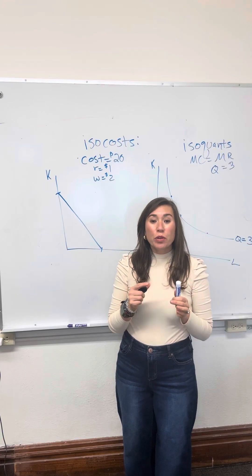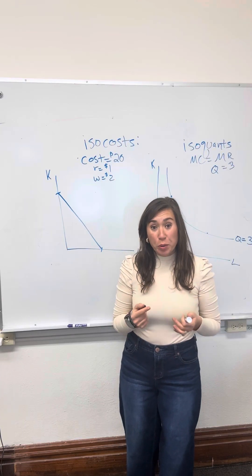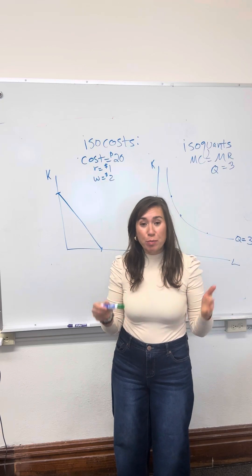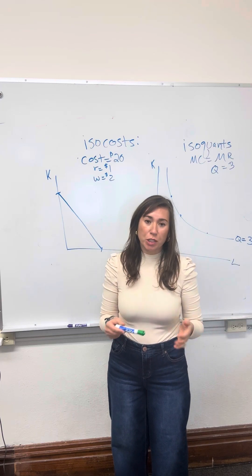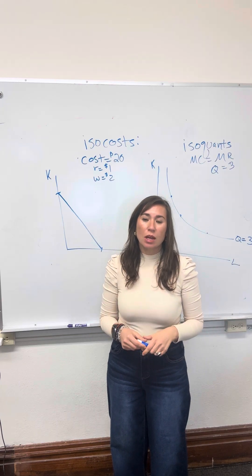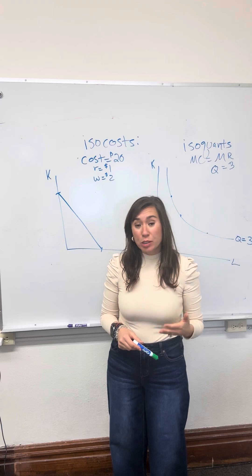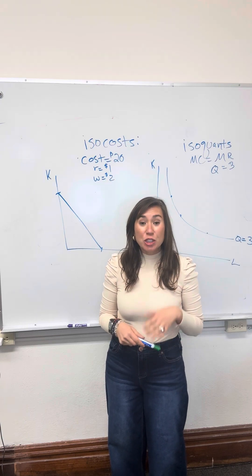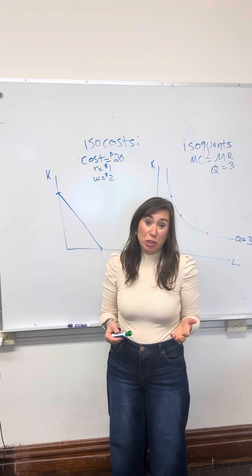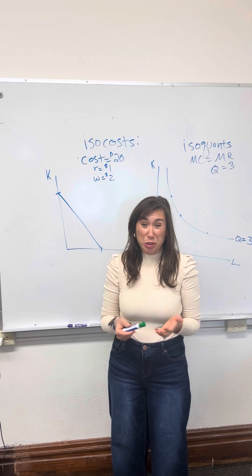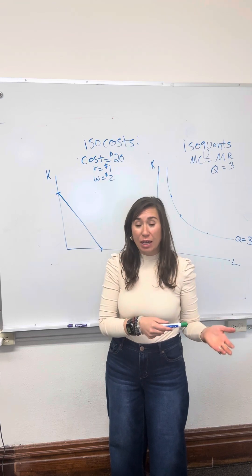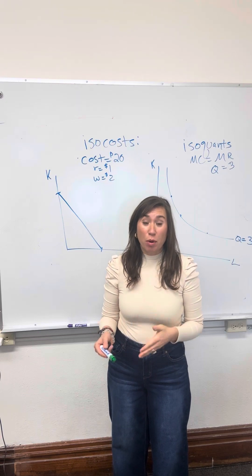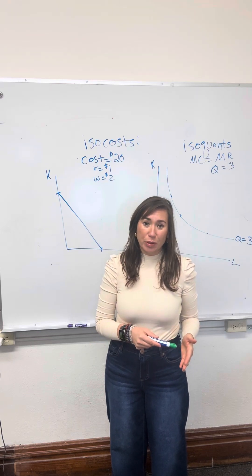The first thing a firm has to do is ask themselves: what's the profit-maximizing quantity of production? In other words, at what production level do they earn the most profit possible? After checking that, they have to make sure the industry is profitable — meaning at that point of production, can they earn a profit that's greater than or equal to zero?